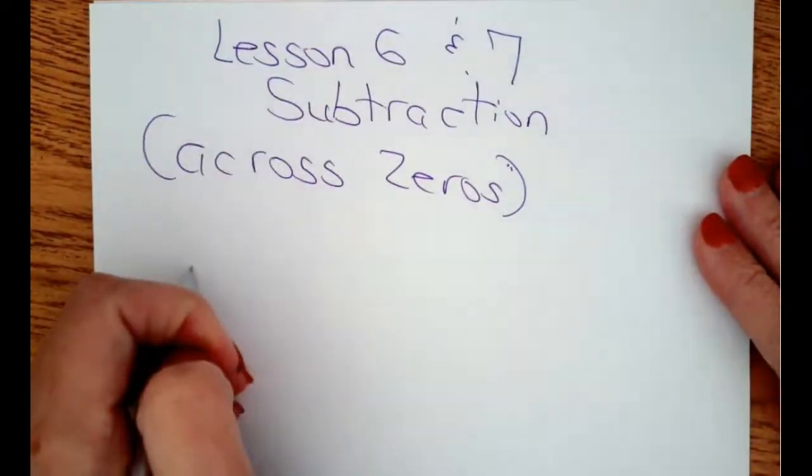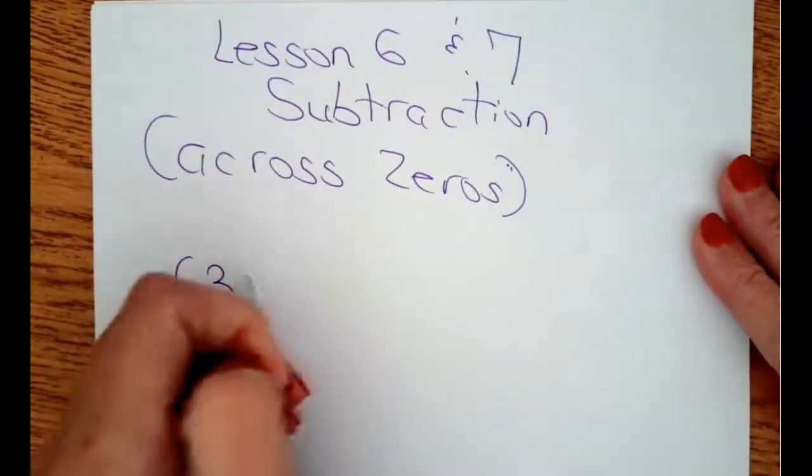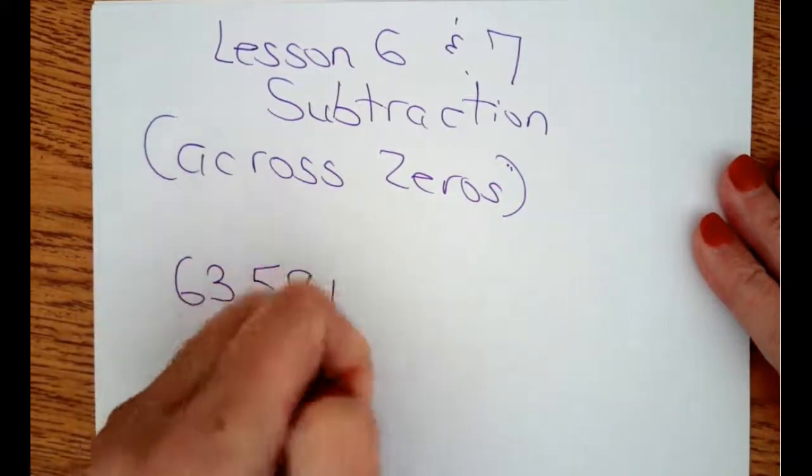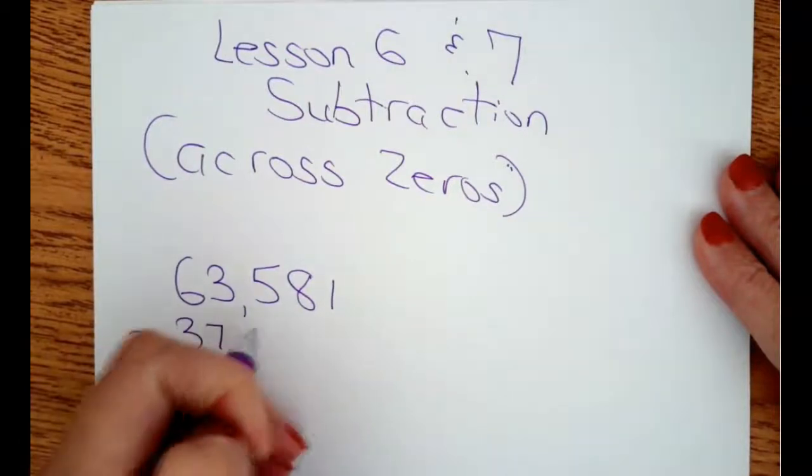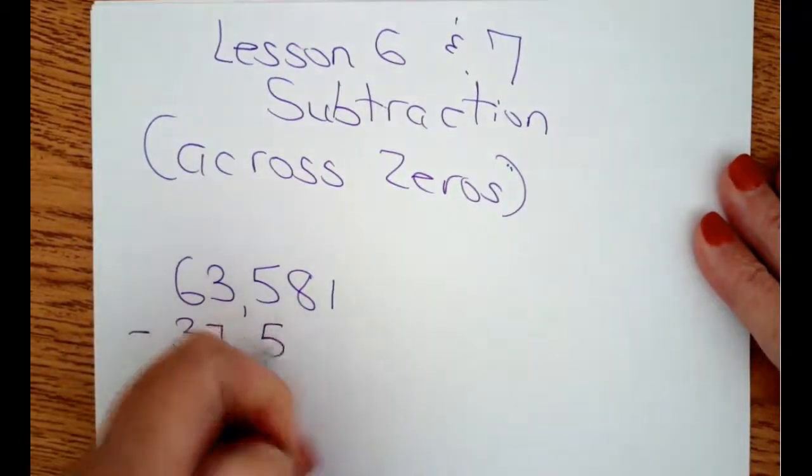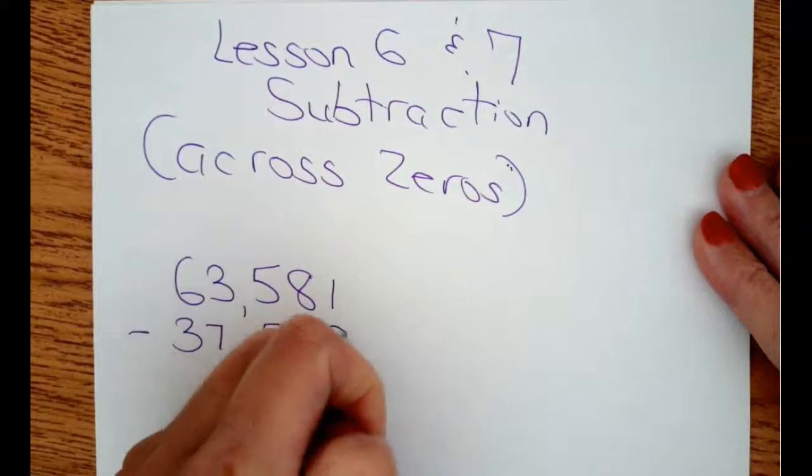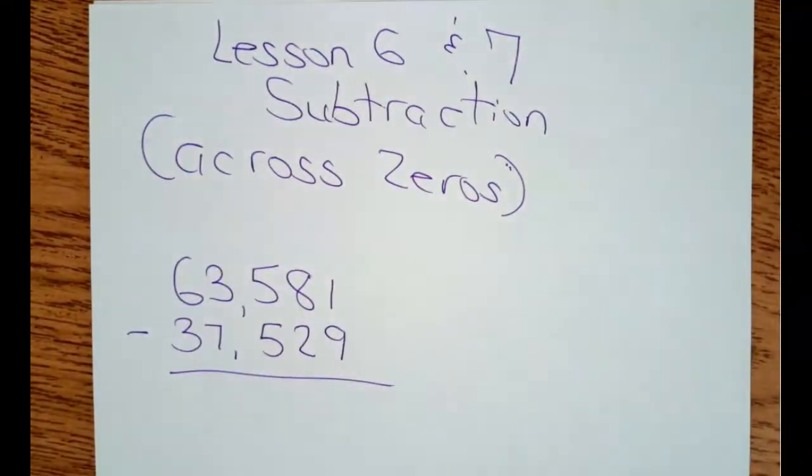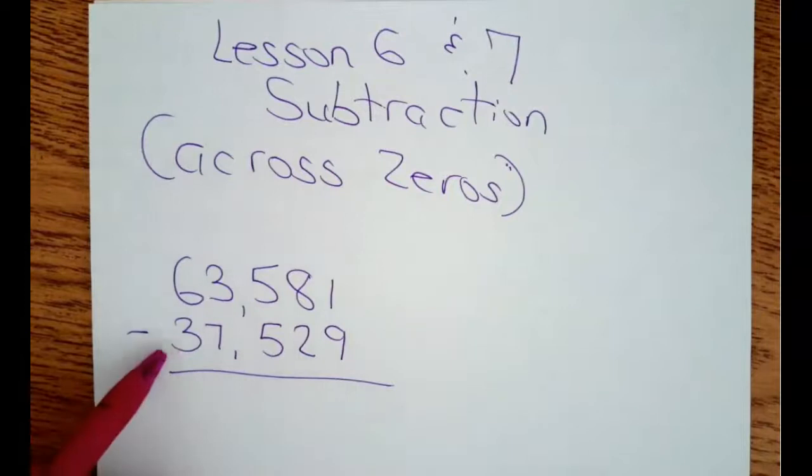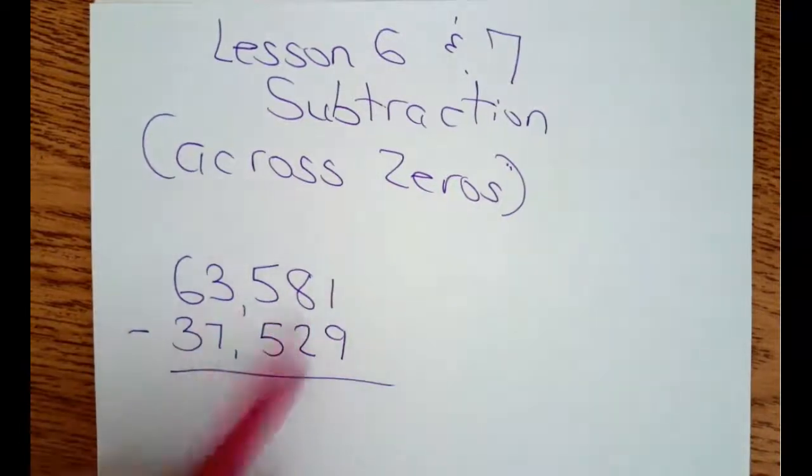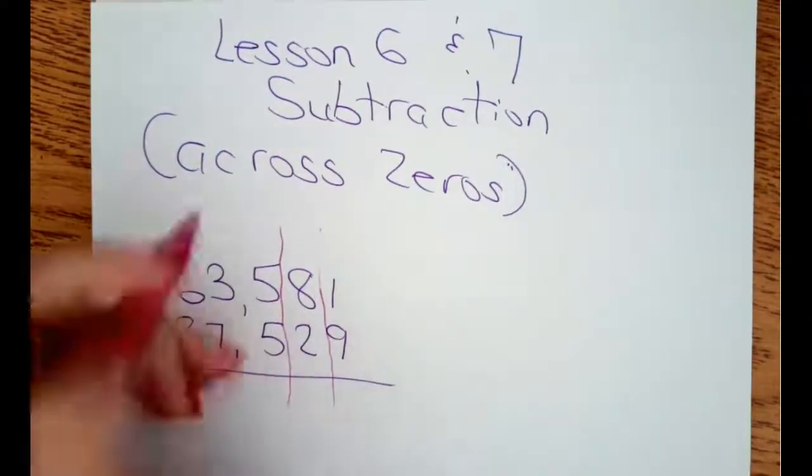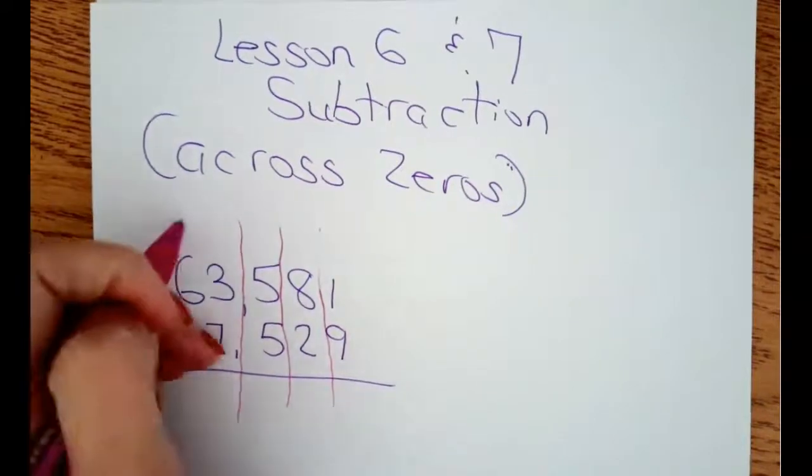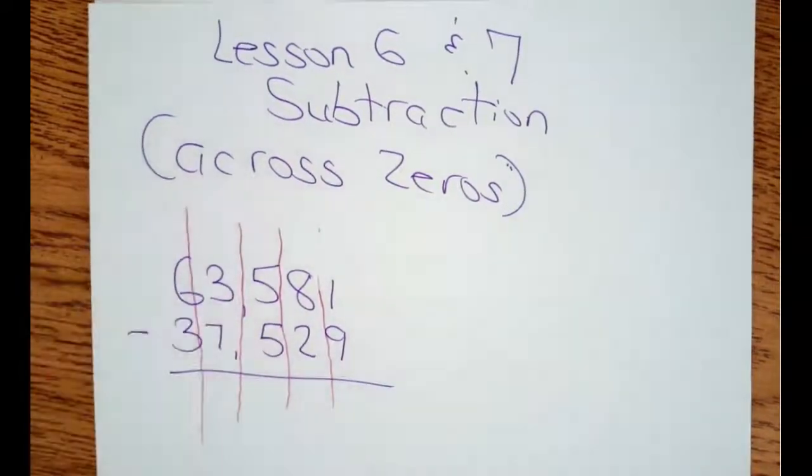So my first problem I'll do here is 63,581 minus 37,529. We have a five-digit number minus a five-digit number. My place values are lined up. It's a subtraction problem. Boys and girls, you can even put a line if you need to separate your place value. Do whatever you need to do to make sure that you do this correctly.